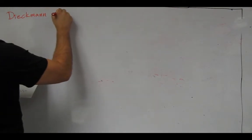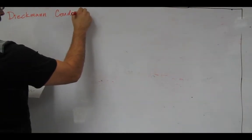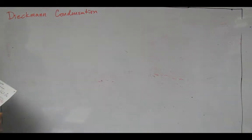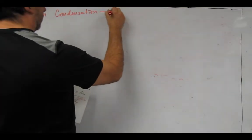So in this short video, we're going to look at the Dieckmann condensation. We're getting pretty heavy into the name reactions now, so a Dieckmann condensation is an intramolecular Claisen.